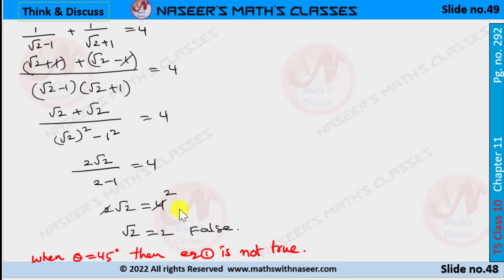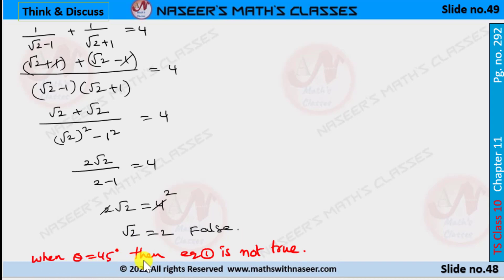Cancelling 2 on both sides, we get √2 = 2. This is false because LHS is not equal to RHS. When θ = 45°, the equation is not true.